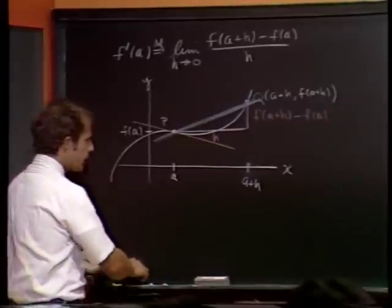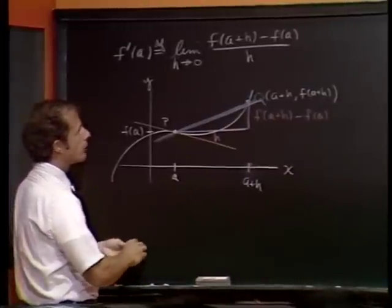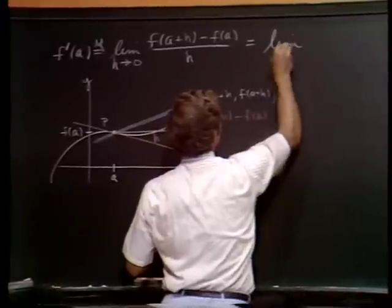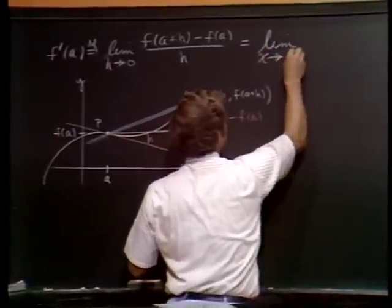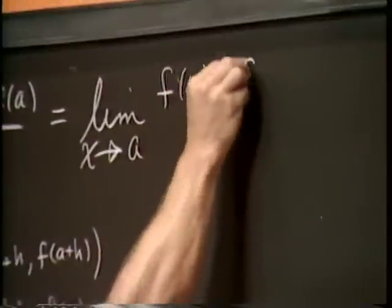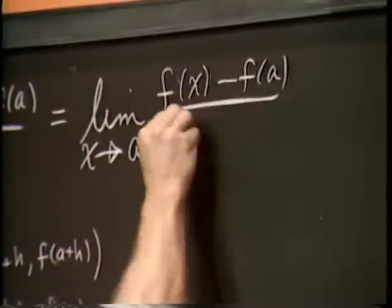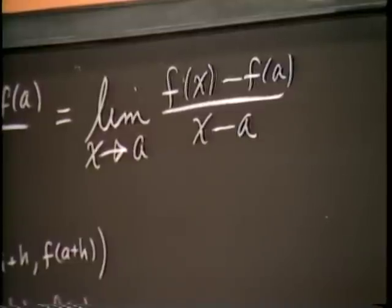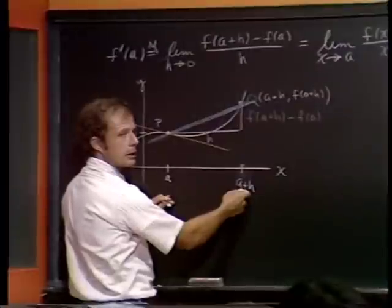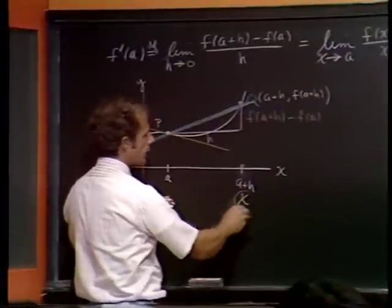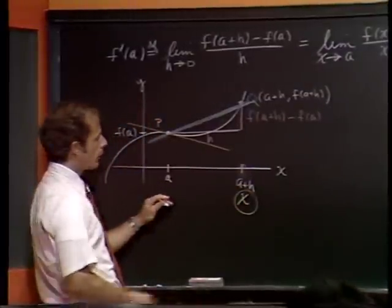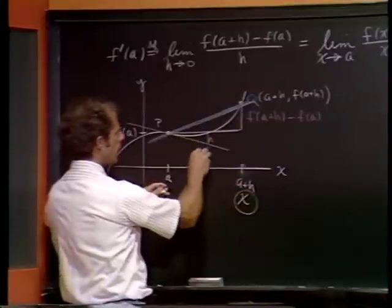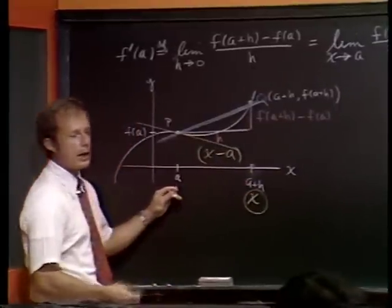Now, the only thing that's different in the so-called theorem that's in the book there, 3.7, is they prefer to write this as follows. Let's write it as the limit as x approaches a, f of x minus f of a over x minus a. It looks different algebraically, but it really is the same thing, because rather than call this a plus h, we're going to call it x.